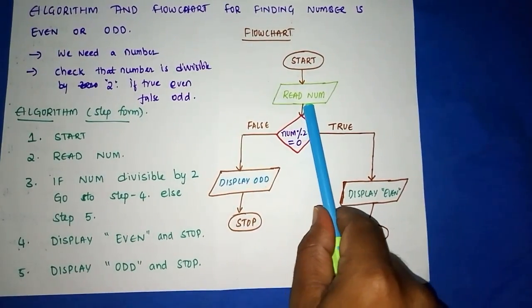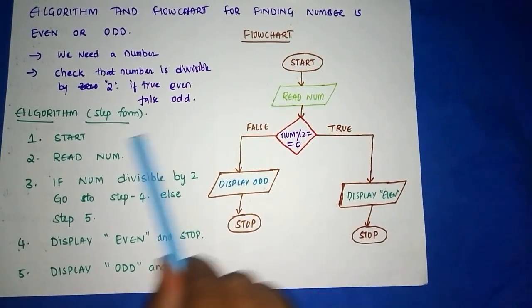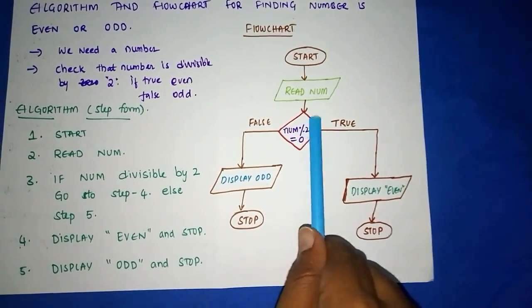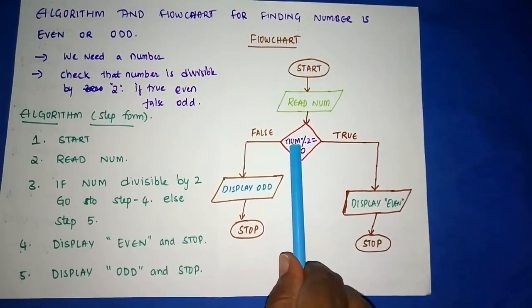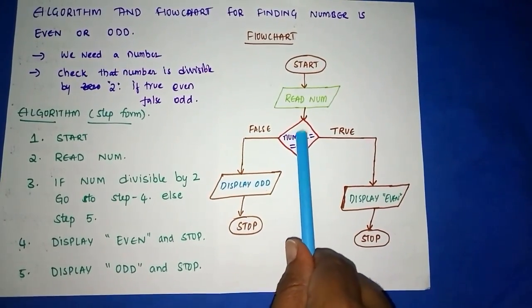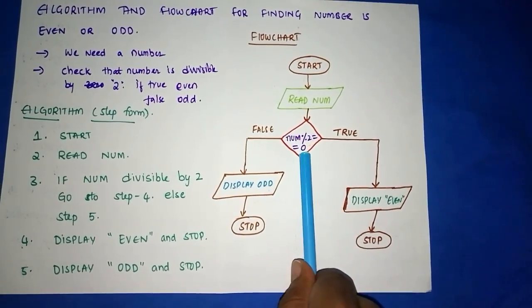READ NUM. So read number here in parallelogram, we are writing READ NUM. And next, this is the condition, so condition is written in a rhombus, we call it a decision. The decision is: number modulo 2 equals 0. That is, if it is divisible by 2, then the remainder will be 0. To get the remainder, we write modulo (%).